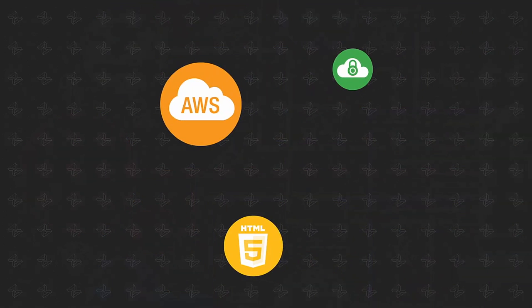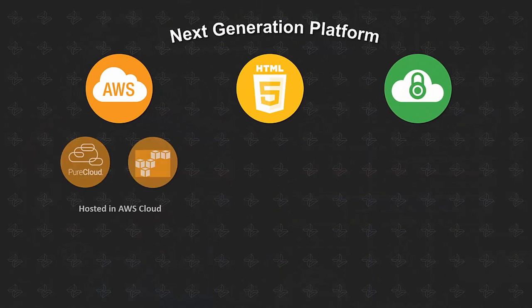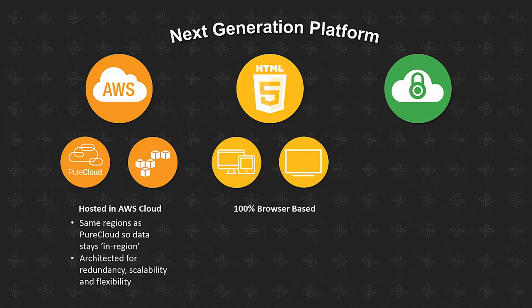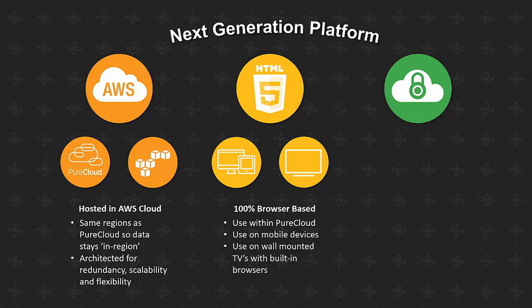This whole solution is built on a next generation platform. Emite itself is hosted in the same AWS cloud as PureCloud so your data stays in region. It's also architected for redundancy, scalability and flexibility. Emite is an HTML5 application so it's 100% browser-based, meaning you can use it within PureCloud itself via the UI. You can use it on mobile devices and even on wall-mounted TVs with built-in browsers — they make great wallboards.